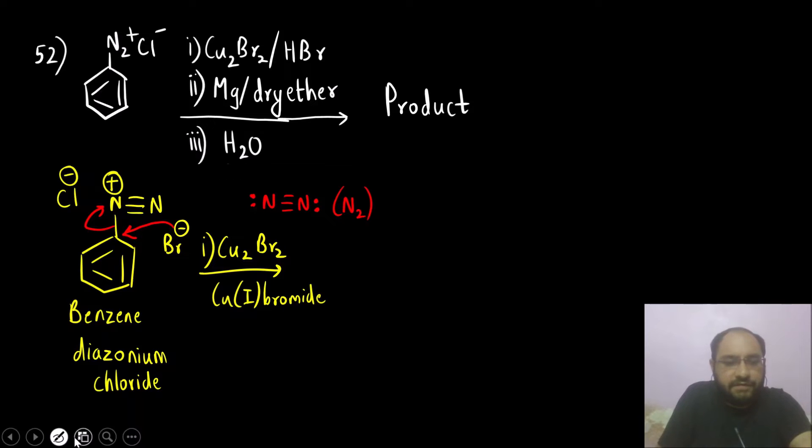This will go away as a good leaving group and what we will get is we will get bromobenzene. This is the first intermediate product, bromobenzene.